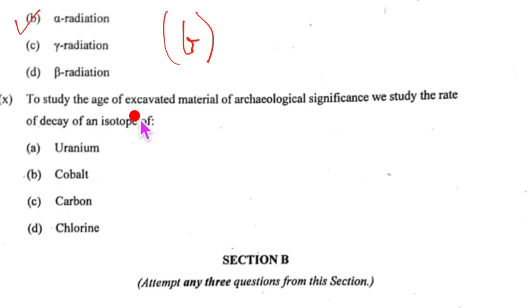We come to tenth one: to study the age of excavated material of archaeological significance, we study the rate of decay of an isotope of - it is carbon 14. So that is your C option.